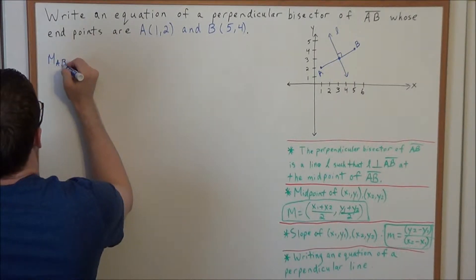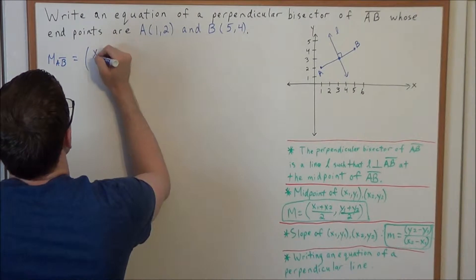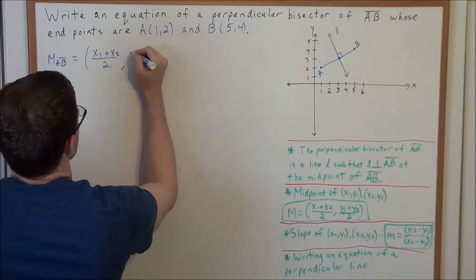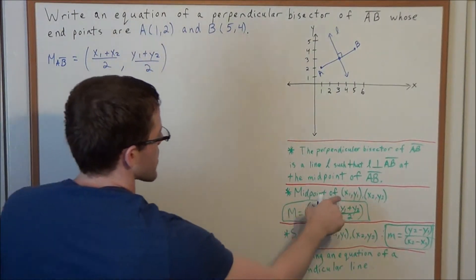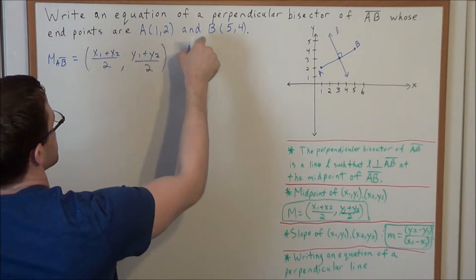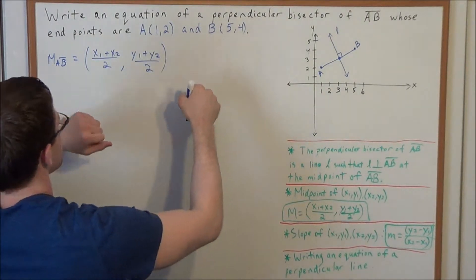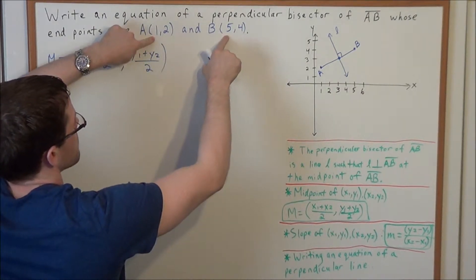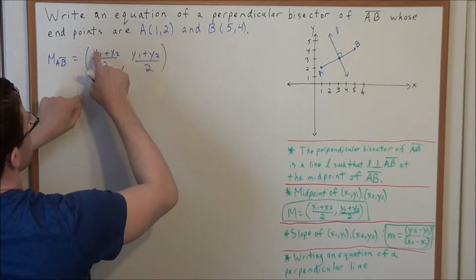For the midpoint of line segment AB, we're looking at the sum of the x-coordinates divided by two and the sum of the y-coordinates divided by two, when we have two points (x1, y1) and (x2, y2). In this case we're looking at points A and B. The x-coordinate of A is 1 and the x-coordinate of B is 5, so we're going to substitute 1 and 5 for x1 and x2.